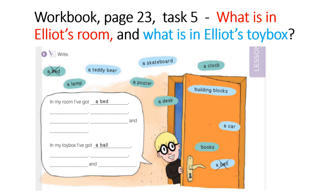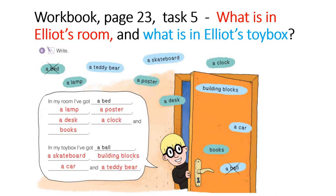Now, workbook page 23, task 5. What is in Elliot's room? What is in Elliot's toy box? Ono što je u sobi je zelene boje, a što je u kutiji za igračke plave boje. Prekopiraj svaku riječ na pravo mjesto. Stop the video. Pročitajmo zajedno. In my room I've got a bed, a lamp, a poster, a desk, a clock and books. In my toy box I've got a ball, a skateboard, building blocks, a car and a teddy bear.